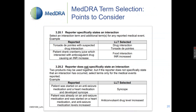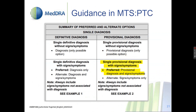Another relevant point from the points-to-consider document is that when you have a possible diagnosis, the preferred approach is to code both the provisional diagnosis and signs and symptoms. Bear that in mind as well. So looking at our verbatim: the patient took herbal supplements, experienced an increase in blood pressure, and it's possibly due to an interaction. If we apply the same principle here, we would code the consequence and the possibility of that as a diagnosis.